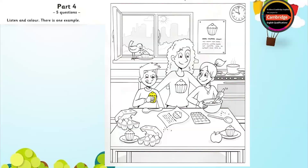Four. And now the cake between the eggs. Let's colour that one too. OK. What colour? Let's make that one green. The cake between the eggs. OK. There. Well done.